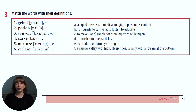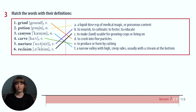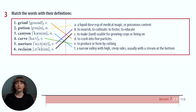As a post-reading activity, you are to match the words with their definitions in the exercise that you see on your screens. Here you can check your results. Grind – to crush into fine particles. Potion – a liquid dose, a special medical, magic or poisonous content. Canyon – a narrow valley with high, steep sides, usually with a stream at the bottom. Carve – to produce or form by cutting. Nurture – to nourish, to cultivate, to foster, to educate. Reclaim – to make especially land usable for growing crops or living on.